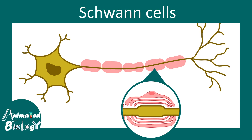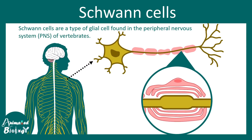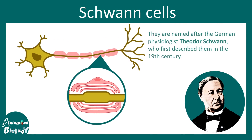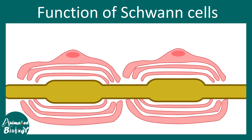In this video we'll be talking about Schwann cells, which are one type of glial cells found in the peripheral nervous system of vertebrates. These Schwann cells are really important for myelination of peripheral nervous system axons. They were first named based on Theodore Schwann who described the Schwann cells in the 19th century.